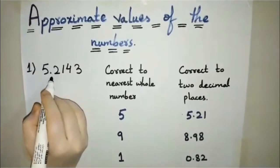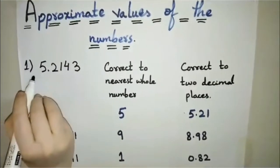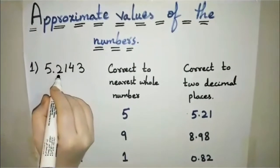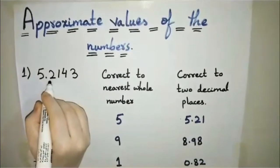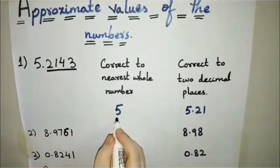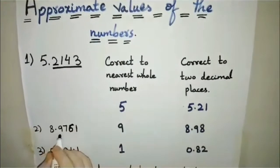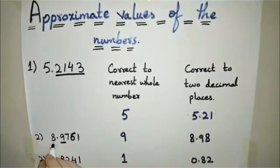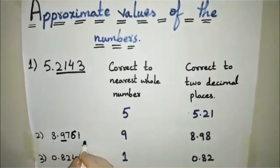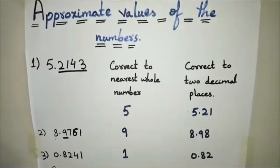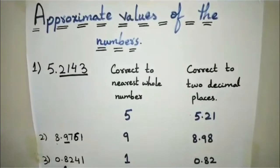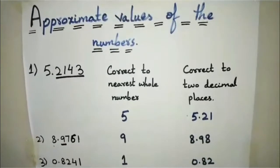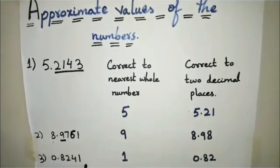If the digit right after the decimal point is less than 5, we do not add 1 — we just drop all digits after the decimal point. For 5.2143, the digit after the decimal is 2, so we drop everything after the decimal: 5 is the answer. For 28.9761, the digit is 9, which is greater than 5, so we add 1 to 8, giving 29. For 0.8241, the digit is 8, so we add 1 to 0, giving 1, and drop all digits after the decimal point.